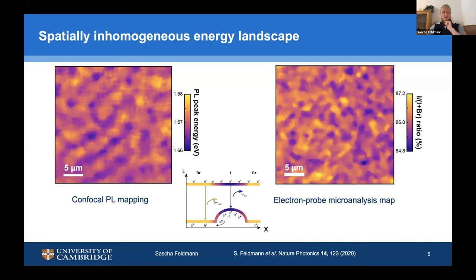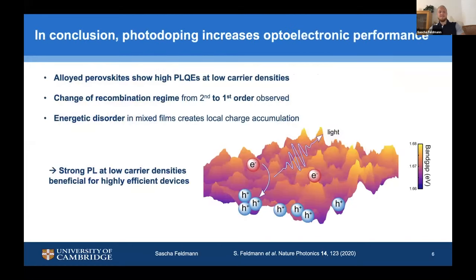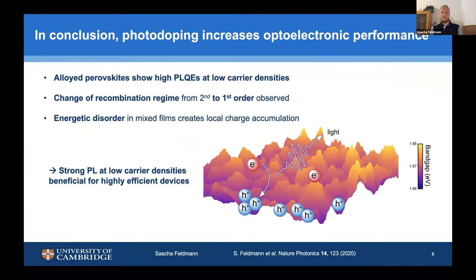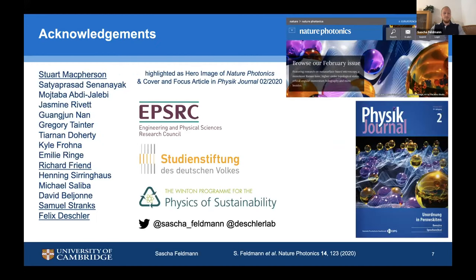In these regions — you might think of them as charge puddles — we actually accumulate charges, in this case mostly holes in the valence band modulation, and this is very efficient for recombination from these high electron or hole density hot spots that form. So to summarize: alloyed perovskites show very high performance and especially high photoluminescence even at low carrier densities, which we attribute to a dynamic change from second- to first-order recombination due to an effective doping term arising from energetic disorder, which creates these charge puddles from where electrons and holes can very effectively recombine. I'd like to thank all the people involved in this work, mostly in Cambridge, my first co-author Stuart from Sam Stranks' group, my supervisors Felix and Richard, and the funding bodies.